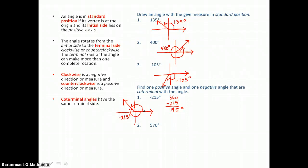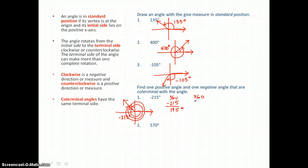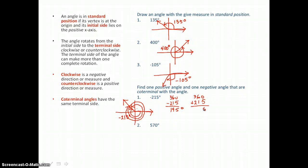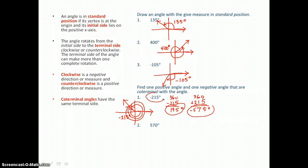If I go in the negative direction to get a negative angle coterminal to our given angle, I'd want to go around a full circle and then go again and stop at that terminal side. So I've traveled 360 degrees and 215 degrees more, adding those distances to get a total of 575 degrees in the negative direction. So this negative angle and this positive angle and the angle we started with are all coterminal — they name the same terminal side.